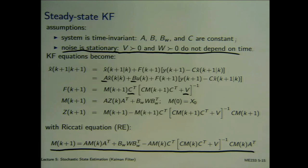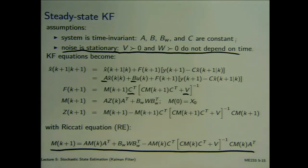We'll start with the review of the Kalman filter equations written on the board. The Kalman filter is a special type of observer with the observer gain given by an equation related to the stochastic properties of the disturbance. To implement this Kalman filter law, we solve the Riccati equation to obtain the matrix M. The Riccati equation converges under the controllability and observability conditions.